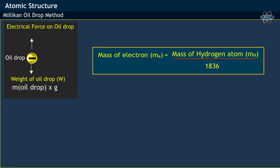It was also found that the mass of electron was about 1836 times lighter than the mass of hydrogen atom, as shown by the equation.